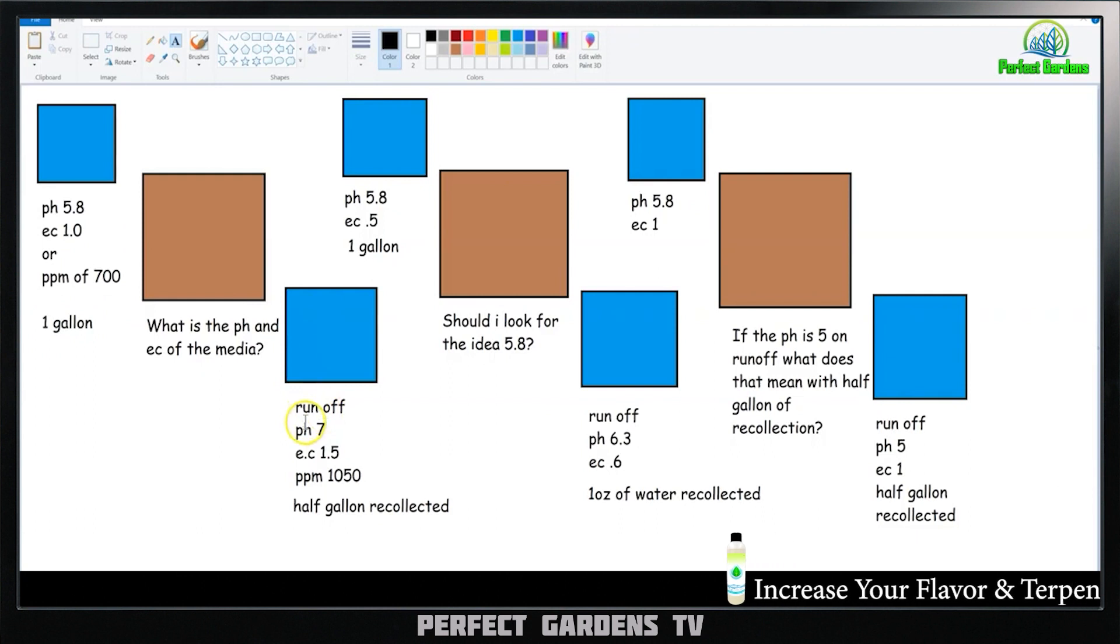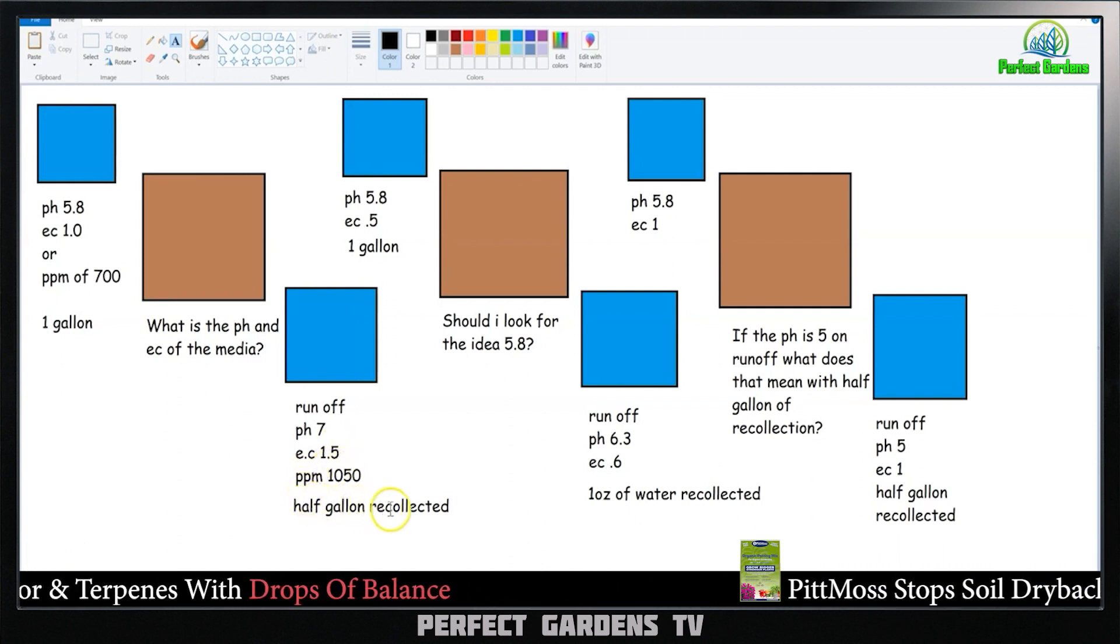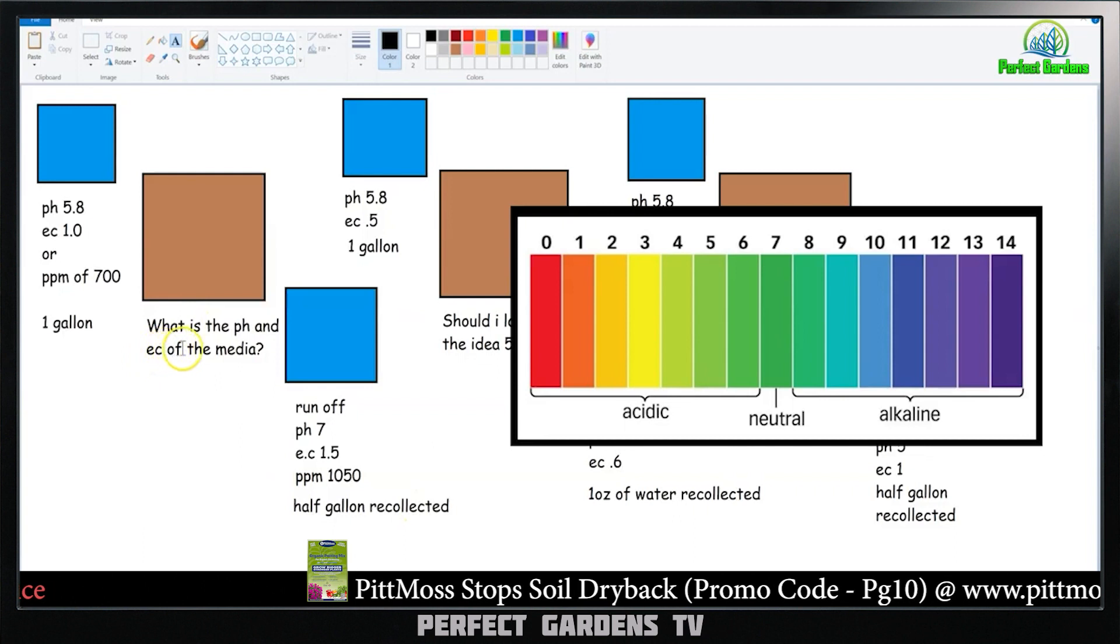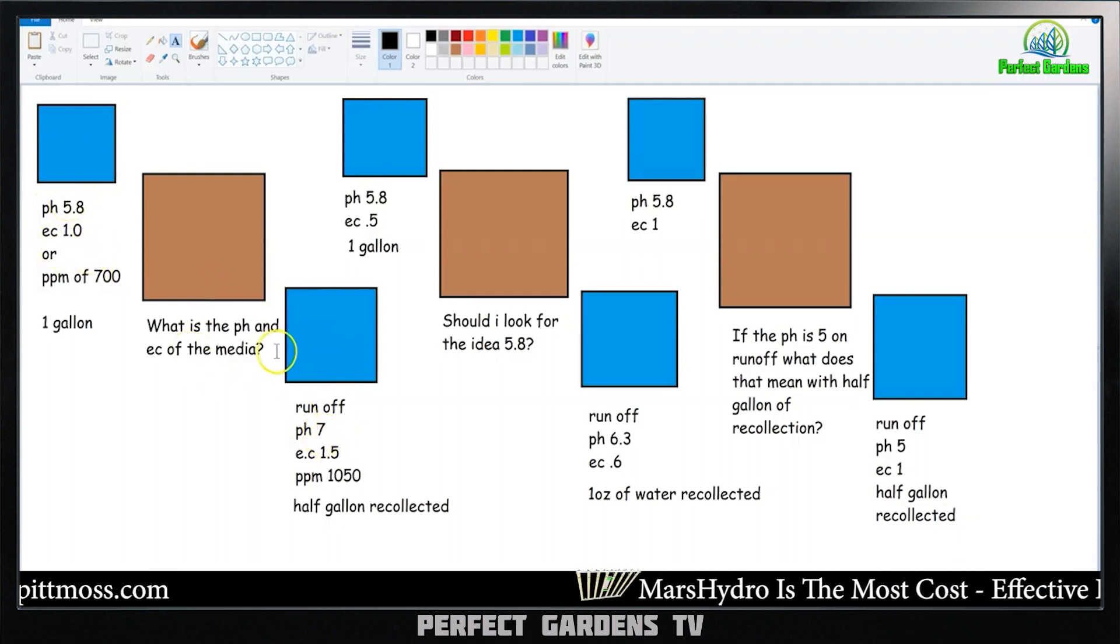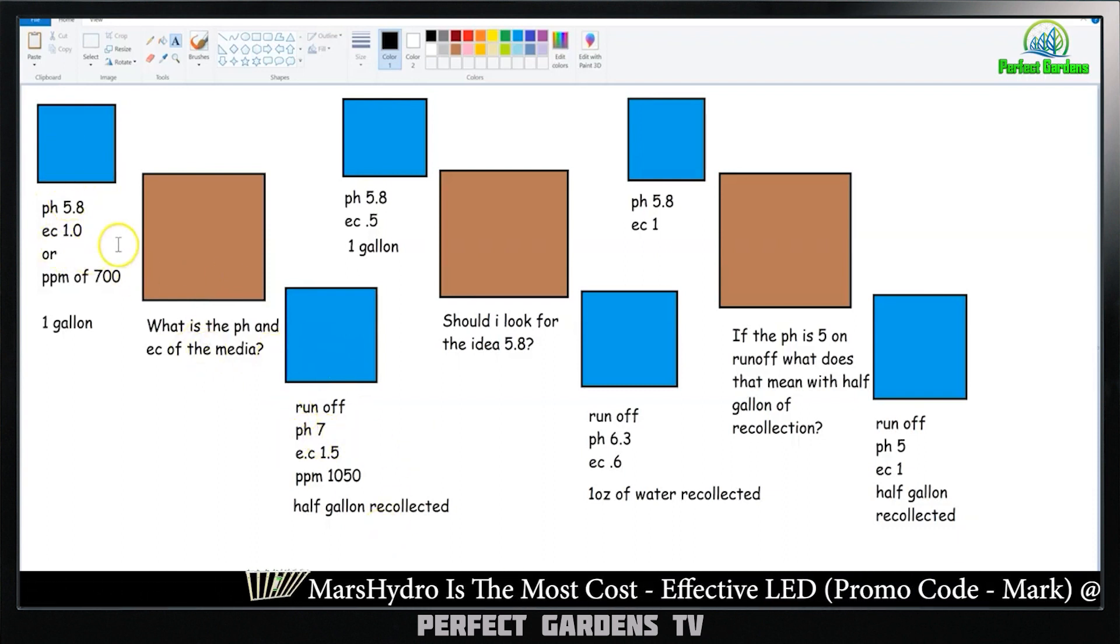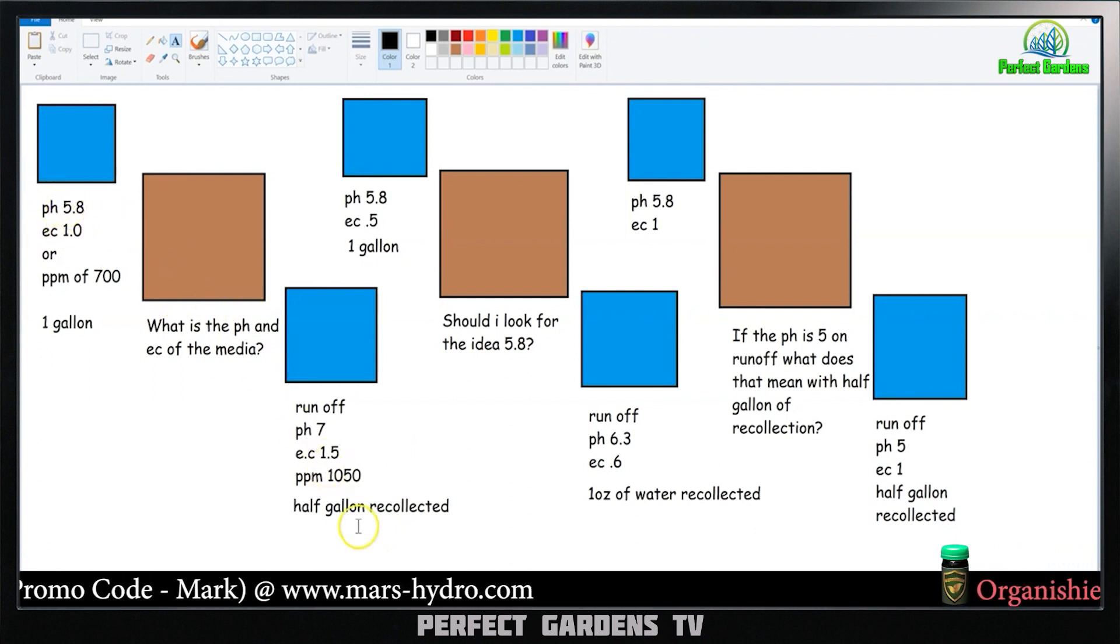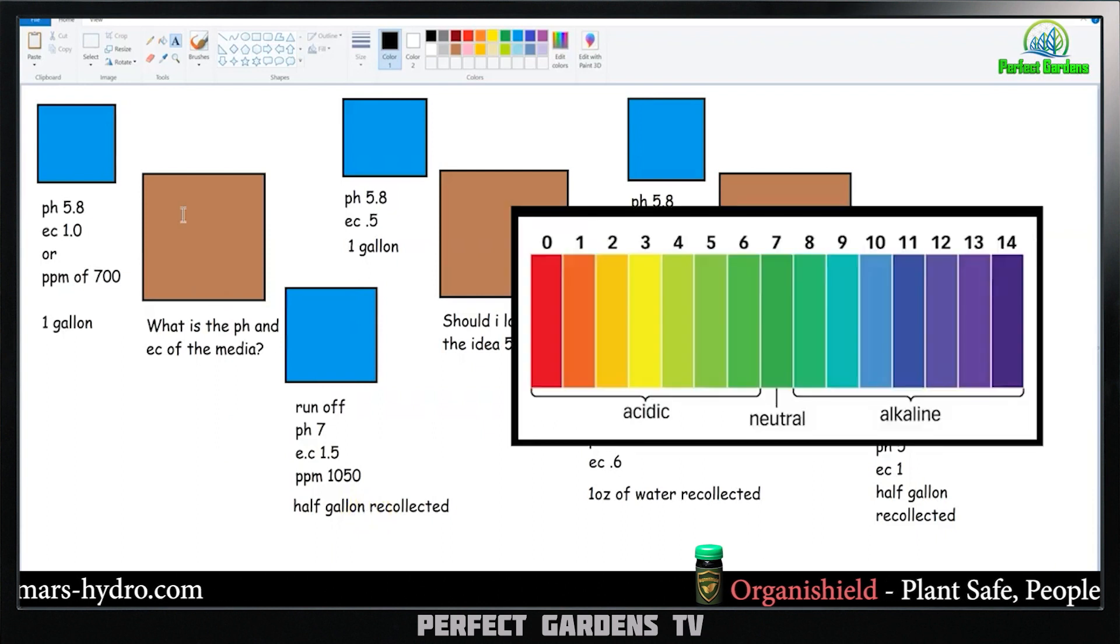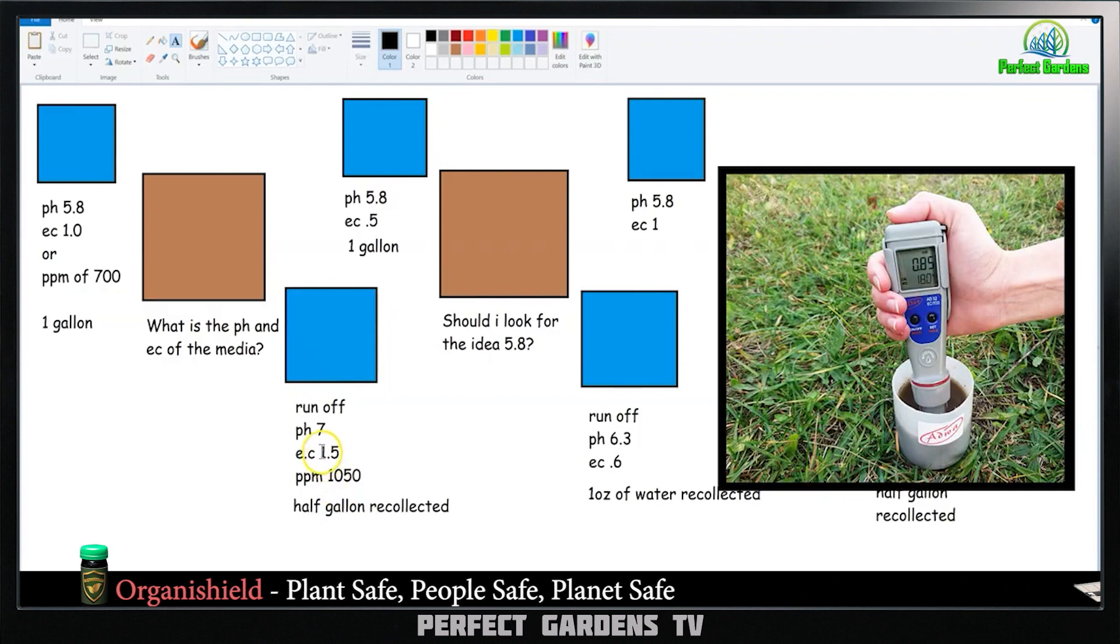Okay, so the runoff comes out at 7, your EC is 1.5 or 1,050, and you recollect a half gallon. What is the pH and EC of the grow media? Okay, so you're putting in 5.8, but you're getting out 7. So what does that mean? That means that this 5.8, even though you collected a half gallon of runoff, your pH of your soil was probably like 7.5, and your EC was 1.5 when you recollected it.